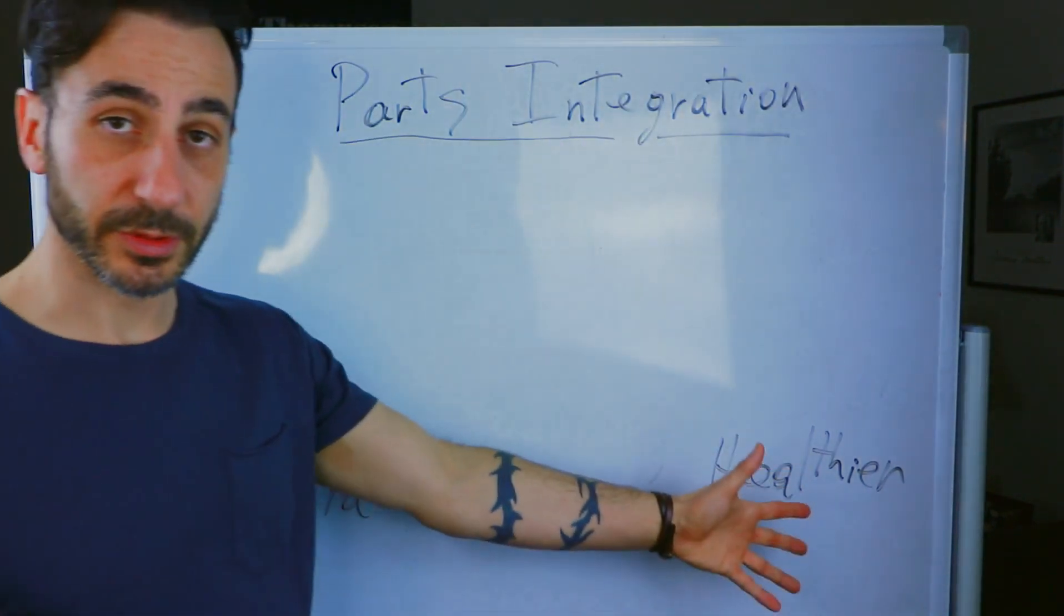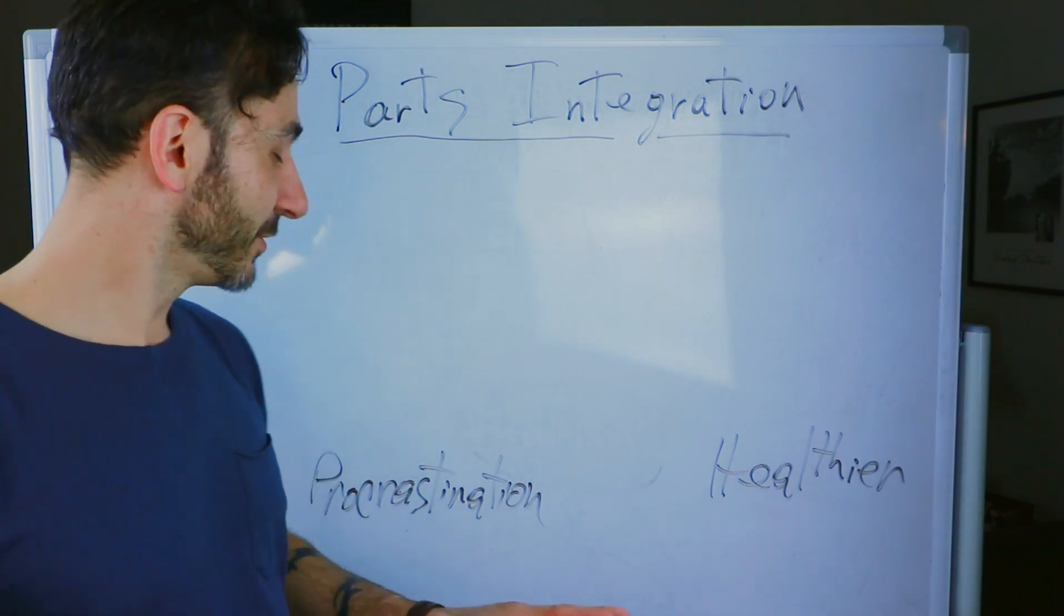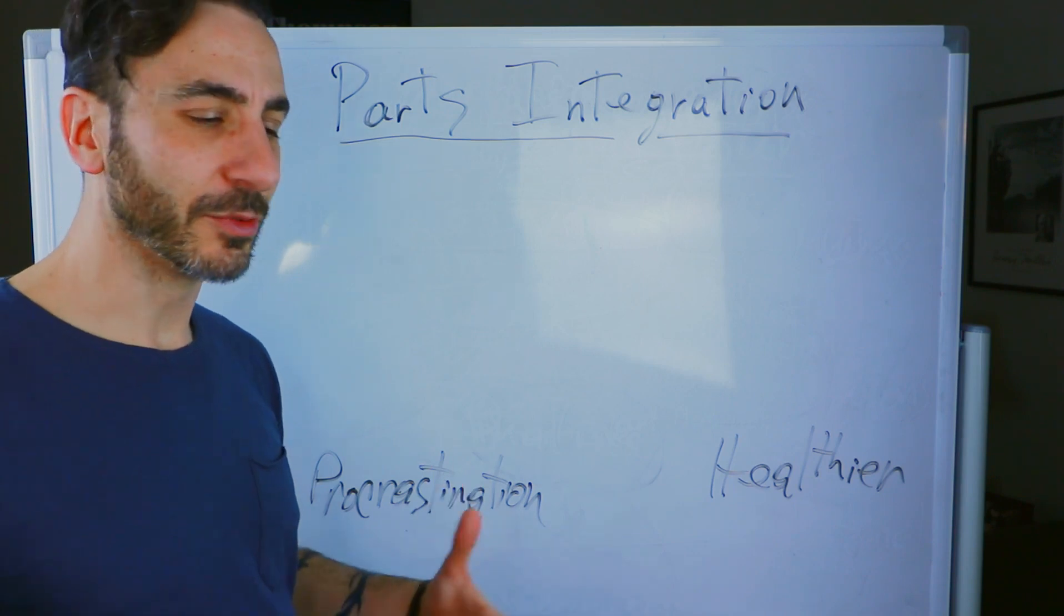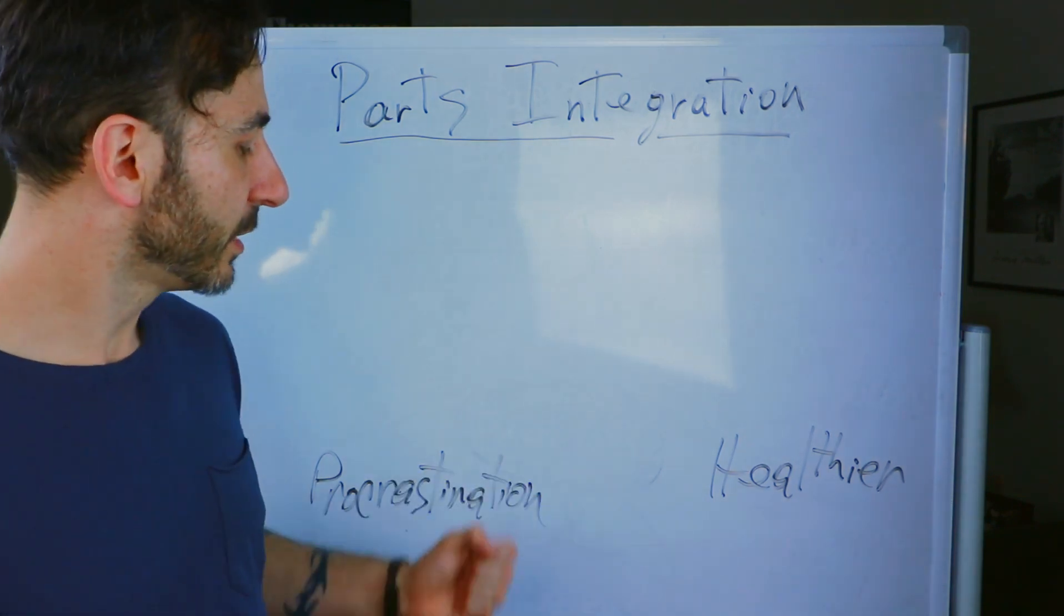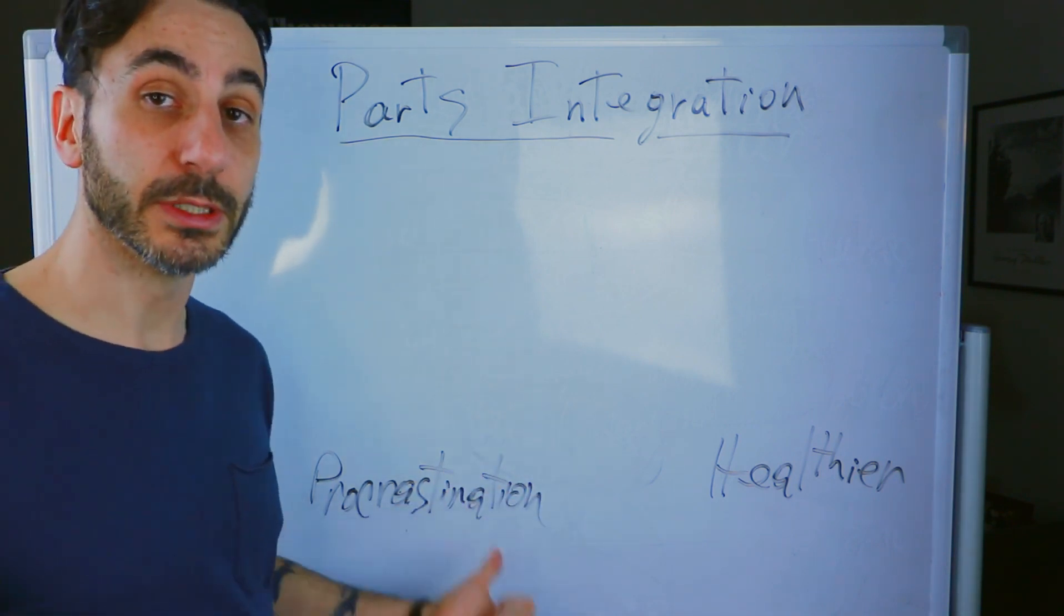So there's a part of you that wants to be healthier. And there's a part of you that doesn't want to do that. It doesn't want to spend the time. It doesn't want to do the work to get healthier. So you could say this is the part that's sabotaging you, but let's get clear about what this part actually is.